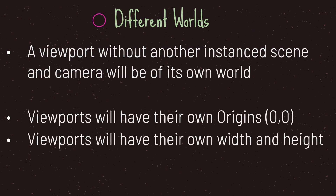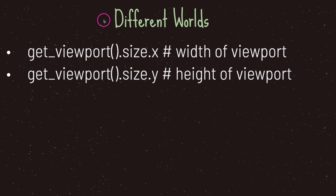A viewport without another instanced scene and or camera will be its own world. This means viewports subclassed to the root viewport will have their own origin and their own width and height. Take the get_viewport method as an example — when you call get_viewport in a script, it retrieves the first viewport node it reaches in the scene tree hierarchy. In most cases, since you normally wouldn't use a viewport outside of special cases, get_viewport naturally gets the root viewport.